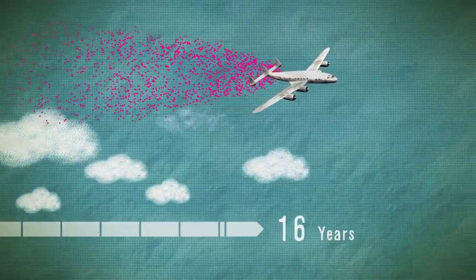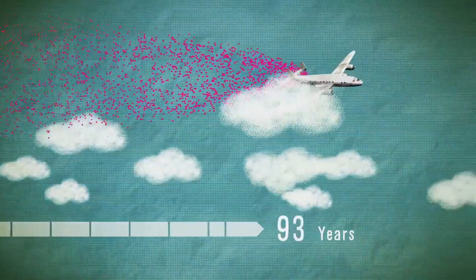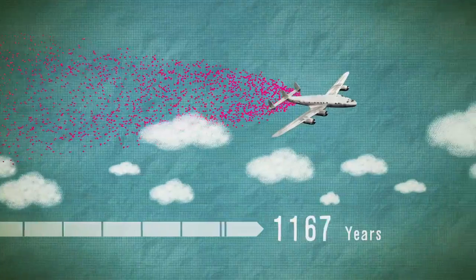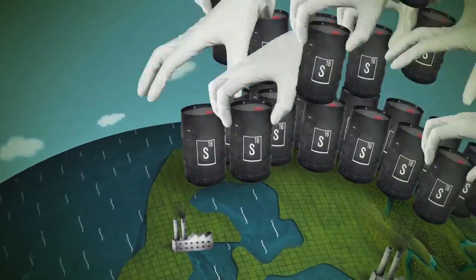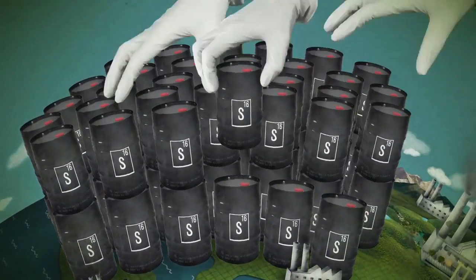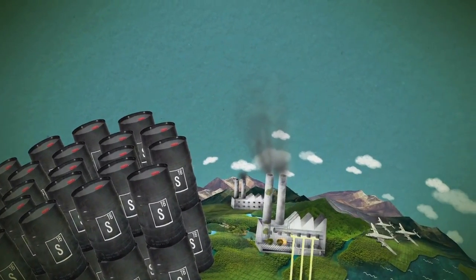To prevent a termination shock, the particles would have to be distributed continuously over decades, centuries or even millennia. Not only would this require many millions of tons of sulfur, it would also make humanity dependent on the functioning of a large-scale technological manipulation of the climate.